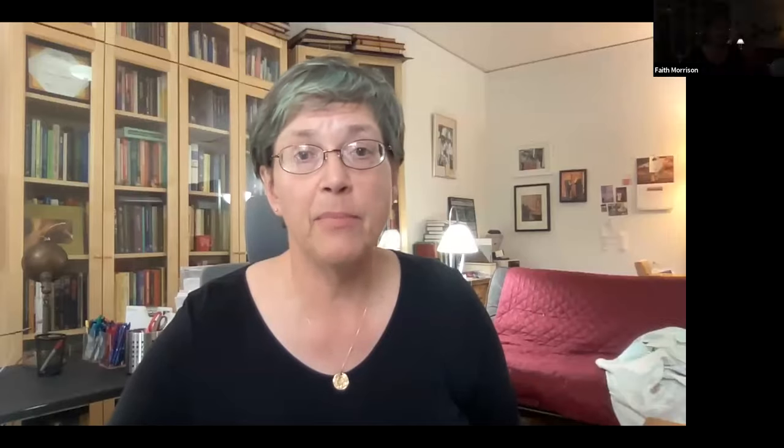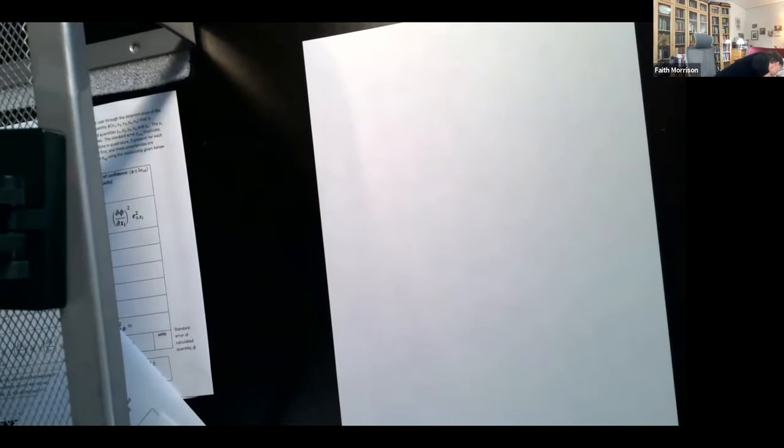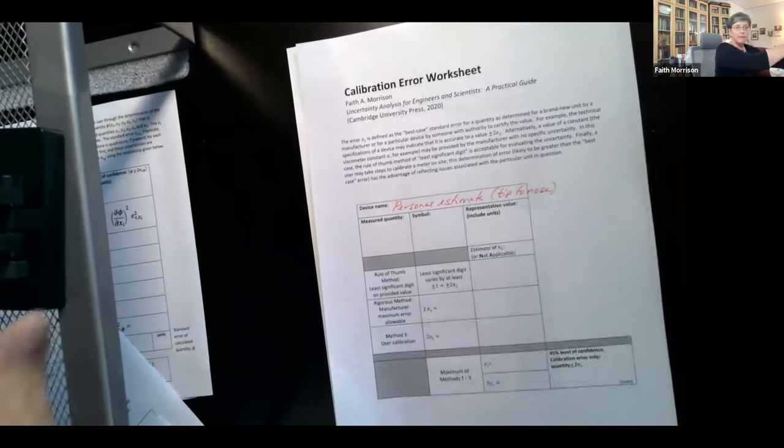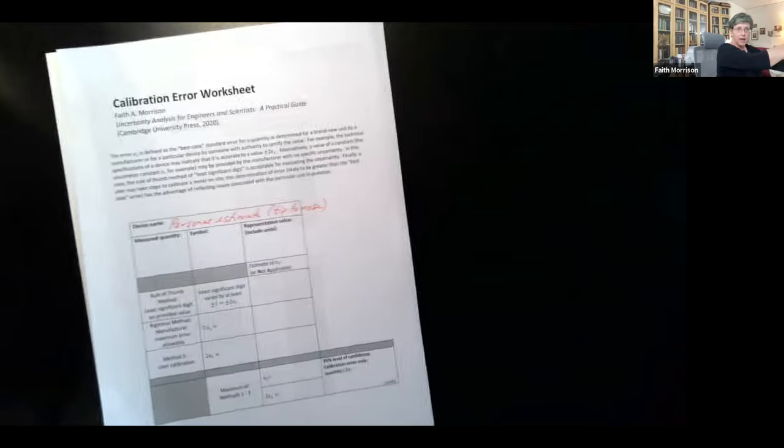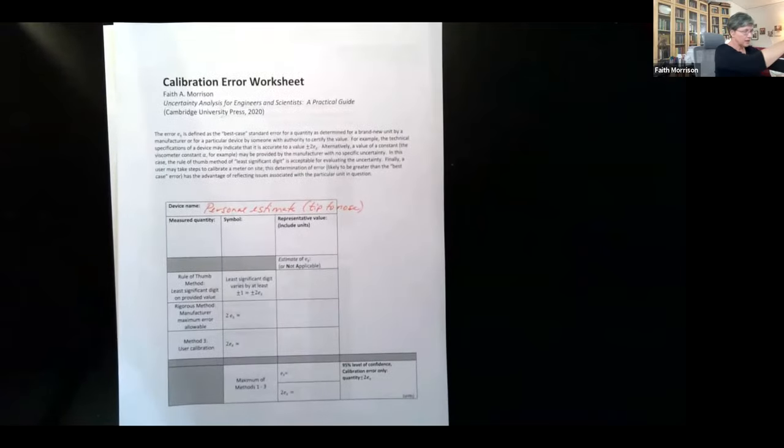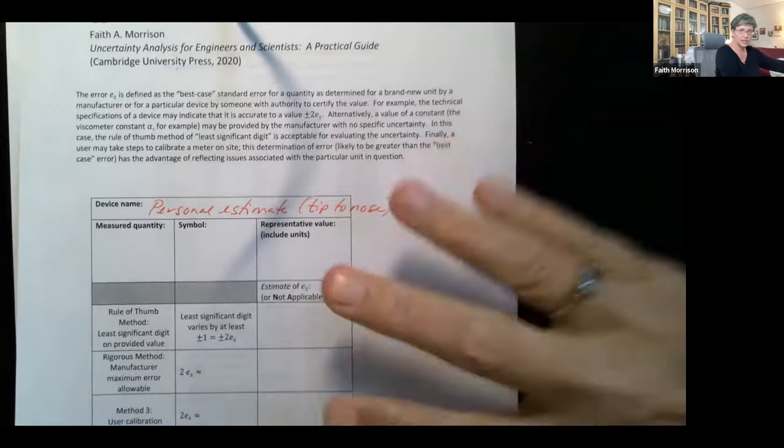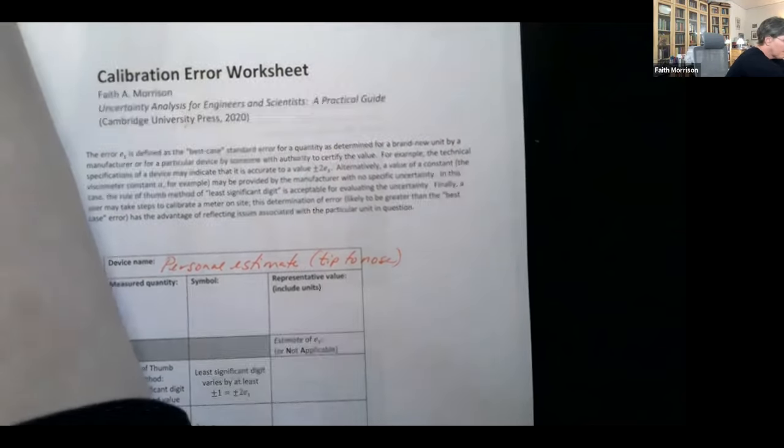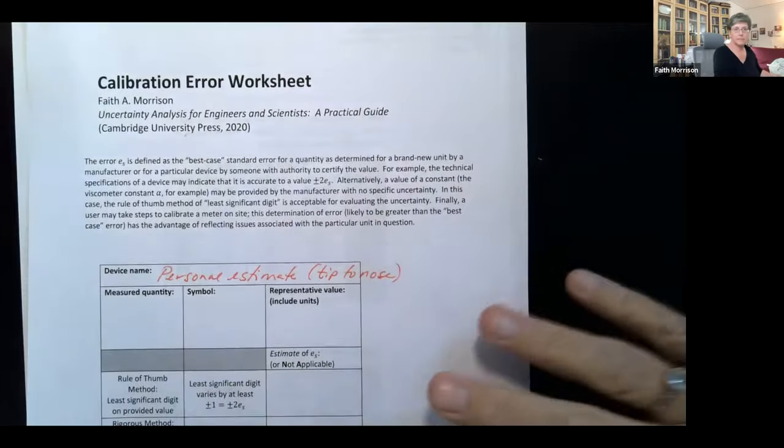So one of the things I developed in my book was a set of worksheets to guide students through the kind of questions one should ask if one wants to interrogate the quality of the data, the quality of the measurements that we make so that we can identify where the limiting conditions are. So this is my worksheet and I'm going to pull one out here for you and write on it for the example that we just gave.